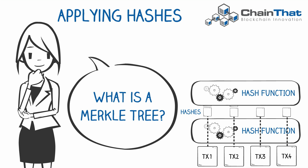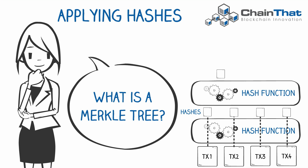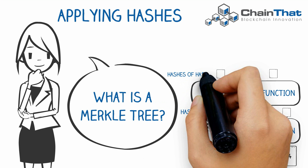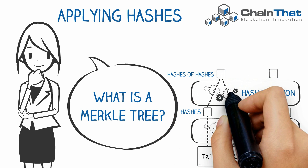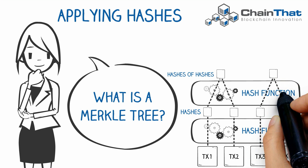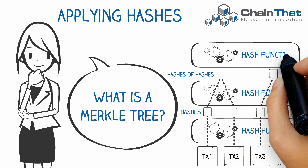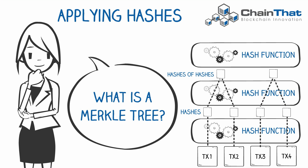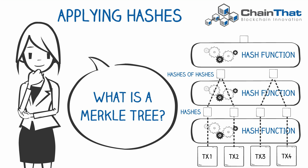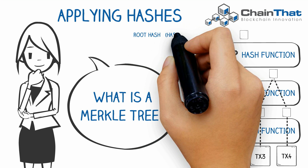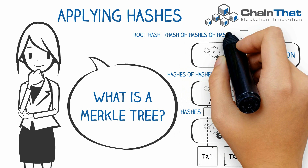Pairs of hashes are then combined and passed through the hash function again. This process generates two separate and unique hashes, which are each based upon the combination of two hashes relating to two transactions. The two hashes are then combined and passed through the hash function again, resulting in a single root hash — forming a complete Merkle tree.